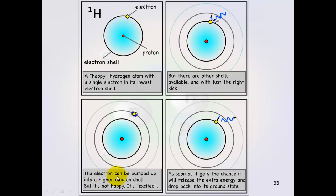The electron gets excited and moves to the next shell. So the electron can be bumped up into a higher electron shell. But it's not happy, it's excited. So it's excited, it's got lots of energy, it's in another shell. But as soon as that electron gets a chance it will release that extra energy and drop back to what's called its ground state or its happy state.